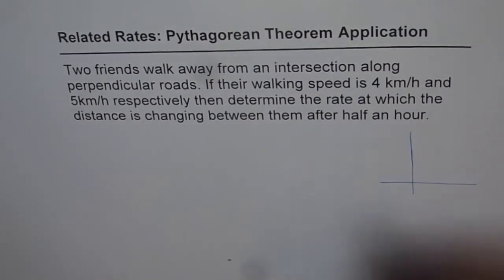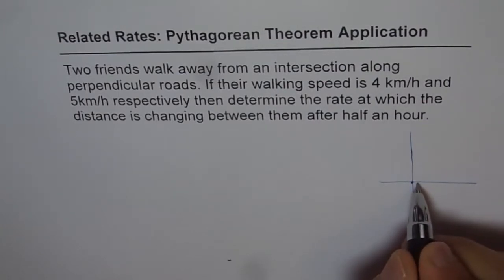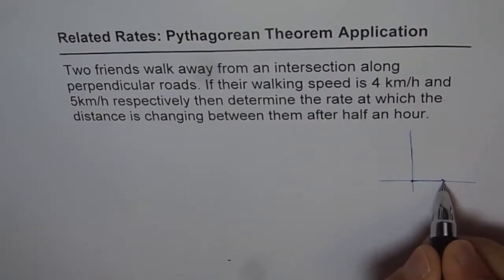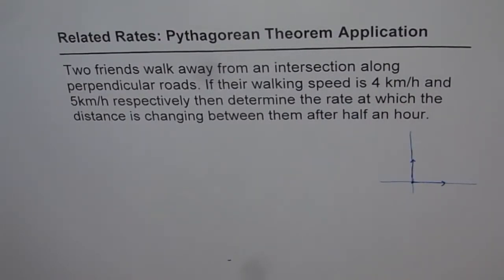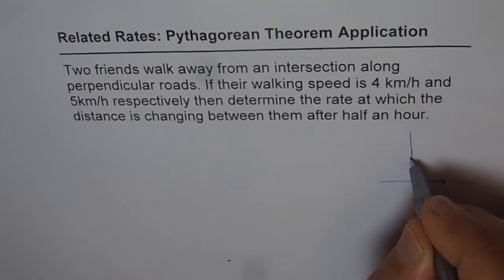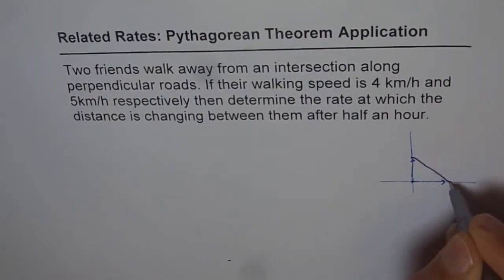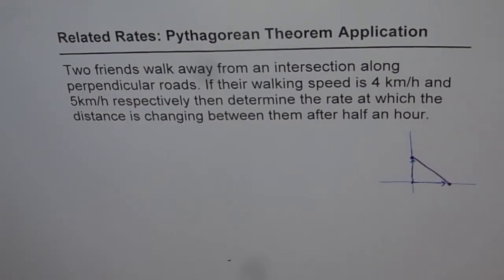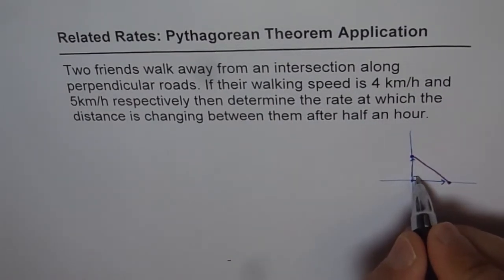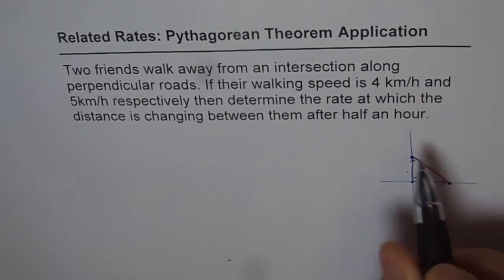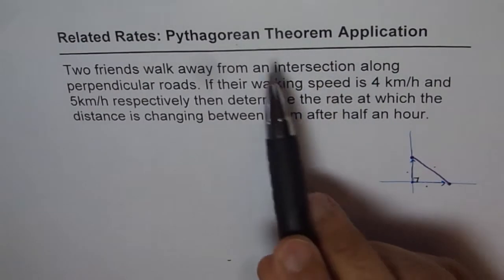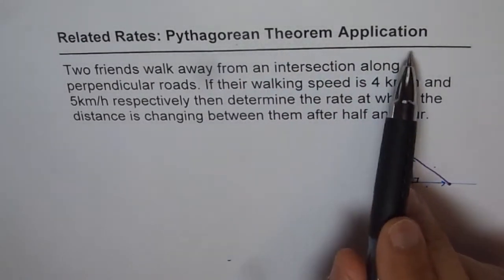So let's think about it like this. That is the intersection and the friends, they just go in this direction and in that direction. So these are perpendicular roads. At any instance of time, what is going to be the distance between them? The distance between them at this instance of time will be like this. Now you will notice, if the road is perpendicular, then we can relate these two sides with the third side using Pythagorean theorem. So therefore in the title I have written Pythagorean theorem application.